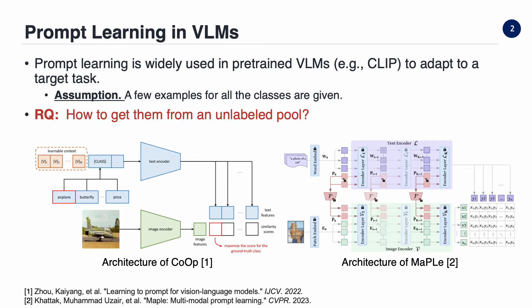Prompt learning is widely used in pre-trained vision language models to adapt them to a target task. This technique is popular because it requires only a small amount of data to significantly boost performance by updating a few learnable context parameters. However, there is an underlying assumption that a few examples for all classes are provided. This raises the question: how can we obtain these examples from an unlabeled dataset?